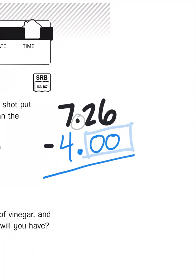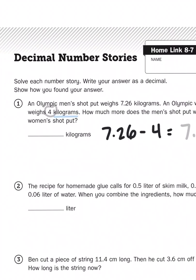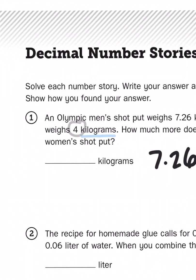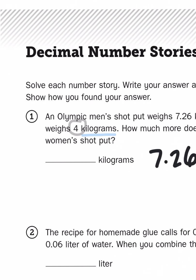So, in reality, 7 and twenty-six hundredths minus 4 is going to leave me with a difference of 3 and twenty-six hundredths. You know all those times that your teachers have asked you to include some estimation before you come up with the actual answer?